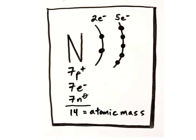For example, all atoms of nitrogen have seven protons and seven electrons. It's electrically neutral, so the seven positive charges of the protons cancel out the seven negative charges of the electrons. An atom of nitrogen will always have an atomic number of seven because they will always have seven protons, but its number of neutrons can vary.